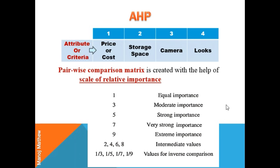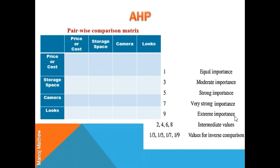This pairwise comparison matrix is created with the help of the scale of relative importance, in which 1 is for equal importance, 3 for moderate importance, 5 for strong importance, 7 for very strong, and 9 for extremely important. The size of the pairwise matrix is equivalent to the number of criteria — here we have a 4×4 matrix as we have four criteria: price, storage space, camera, and looks.